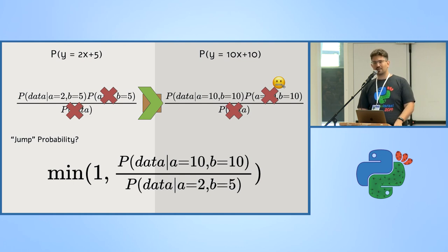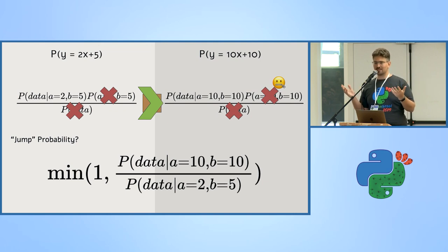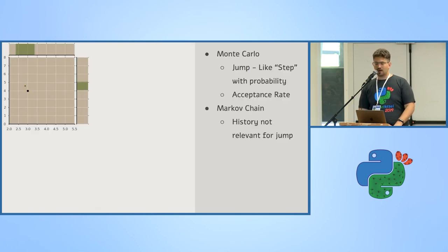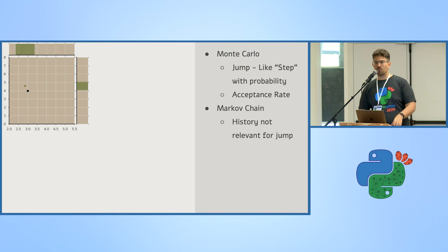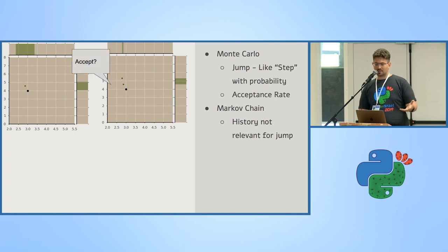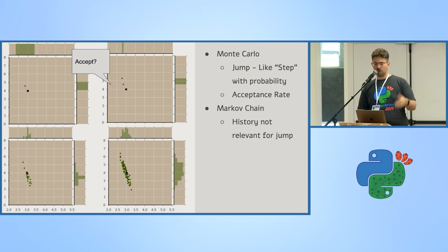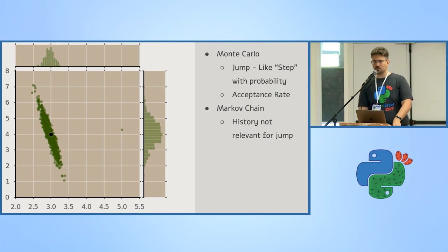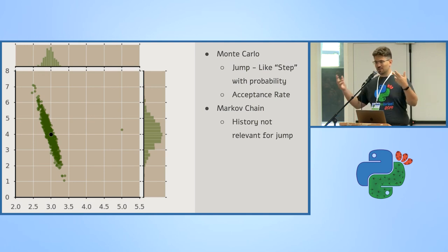The beauty of Bayesian inference is that we don't get just a point estimate with a confidence interval and a p-value that 99% of people don't really understand. We get actual distributions. Visually, we start exploring from a point, accept or reject proposed moves, and after about 10,000 steps we get a joint distribution of a and b — a 2D scatter plot that's much easier to understand than a formal joint distribution.